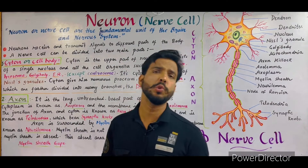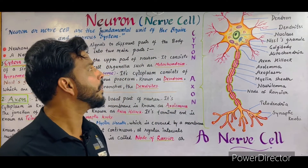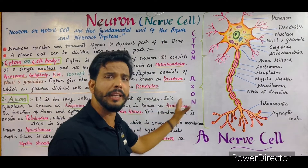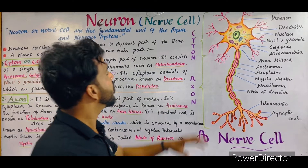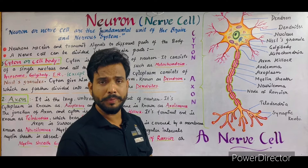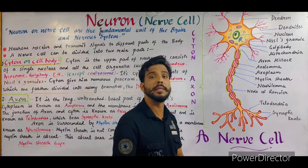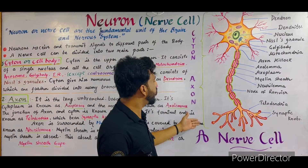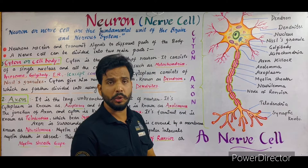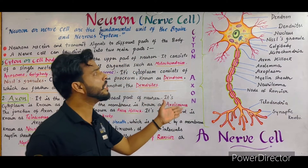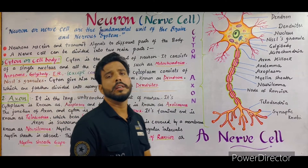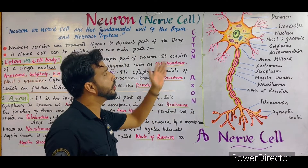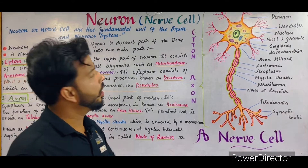Now, what about the structure of a neuron? A neuron or nerve cell can be divided into two main parts, as you can see in this diagram. I will first describe the diagram and then explain the theory in detail. As you can see, there are two main parts: the upper, roughly rounded part is known as the cytone, while the lower, longest part is known as the axon. One important fact: the neuron is the longest cell of the body and may be about 90 centimeters to one meter long in human beings.